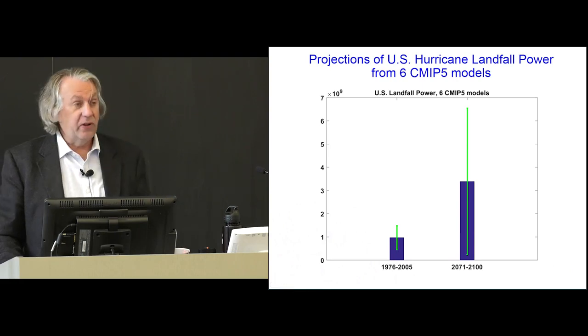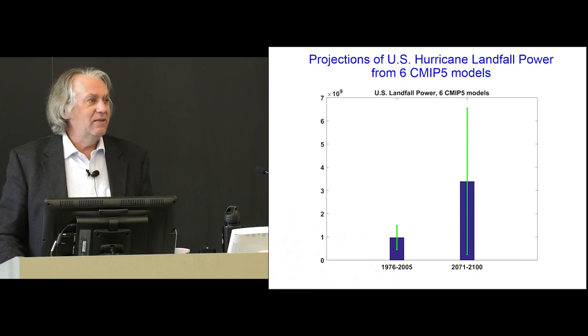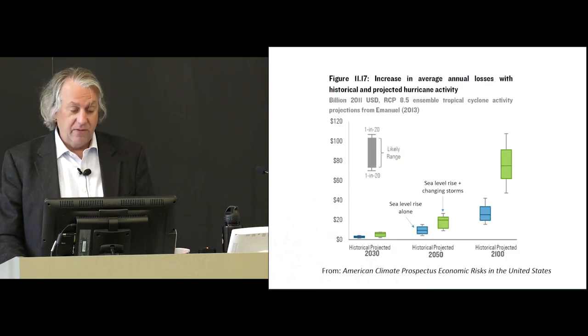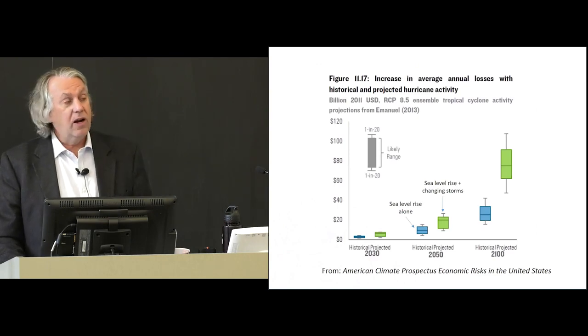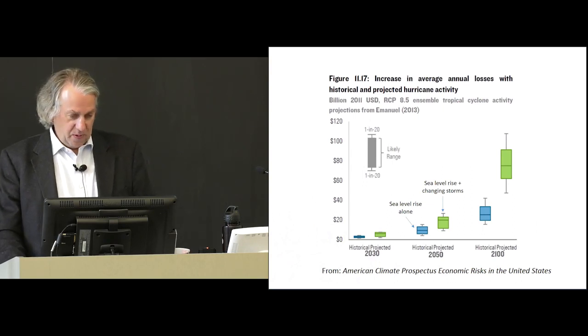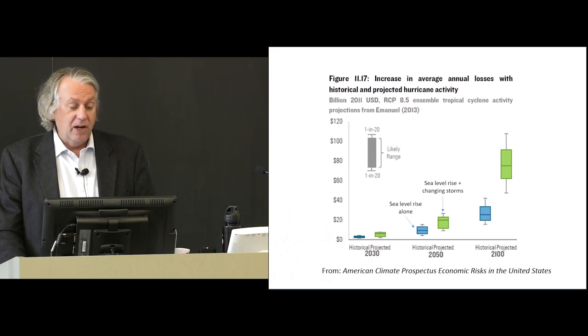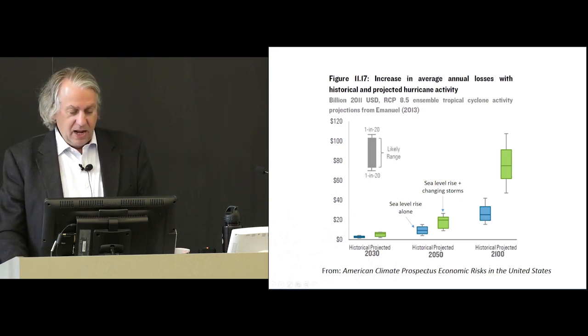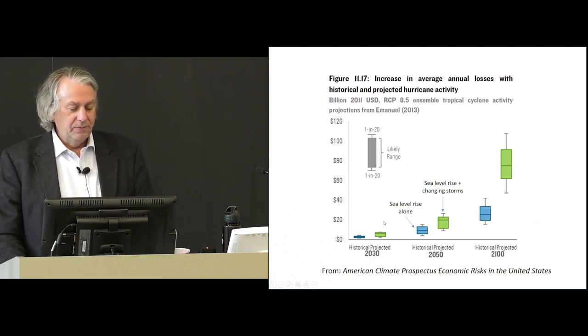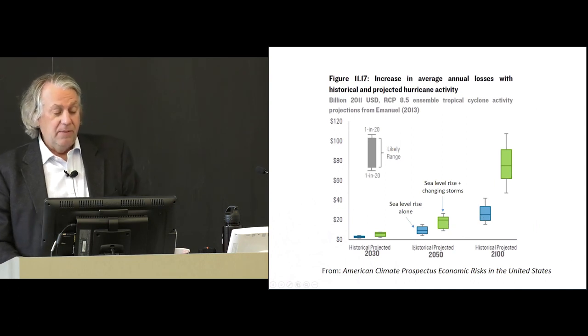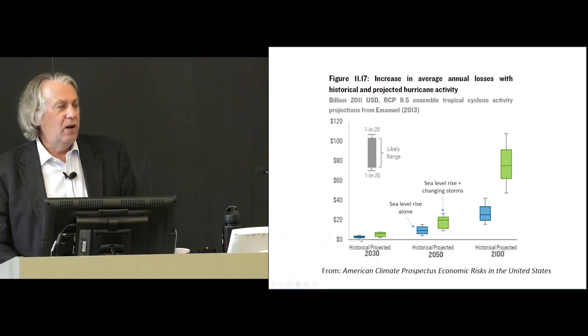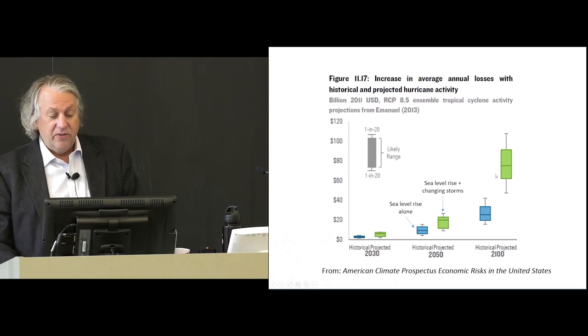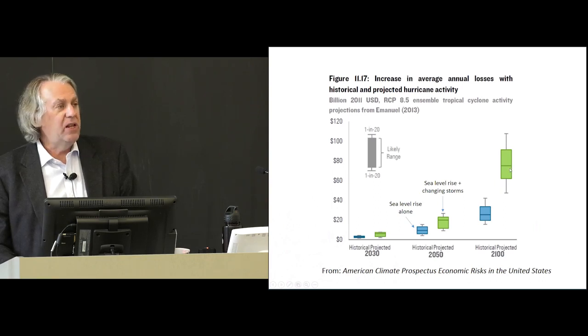A group in New York under Michael Bloomberg, when he was the mayor, did a comprehensive study of projected monetary losses from hurricanes and other phenomena. I'm just showing you the hurricane part of this. This is expected annual losses to the United States from hurricanes for the year 2030 in the left, 2050 in the middle, and 2100 at the right. The blue is just accounting for sea level rise and assuming hurricanes themselves don't change. And the green is also accounting for hurricane changes. So by the end of the century, we could be looking at an additional $70 billion a year in losses in the U.S., again, with a certain amount of uncertainty.